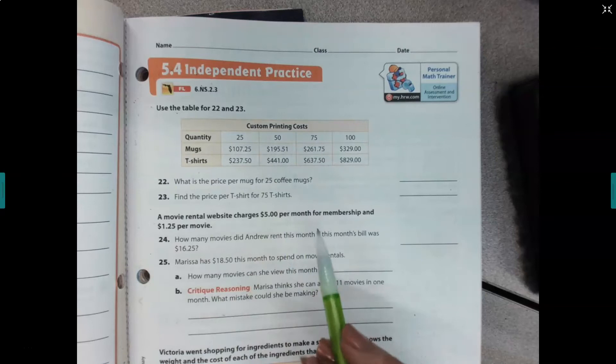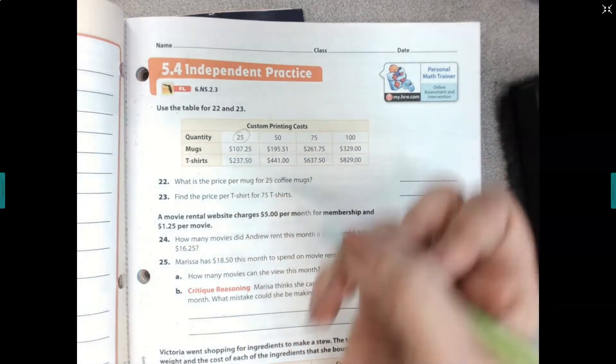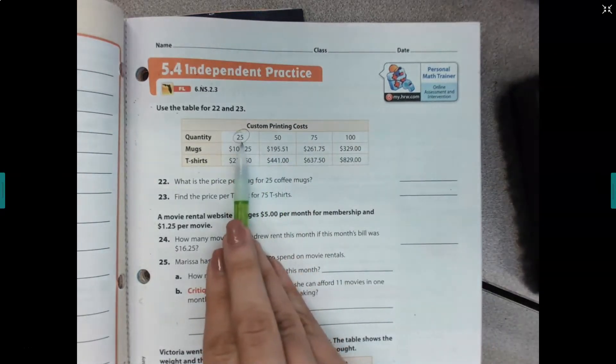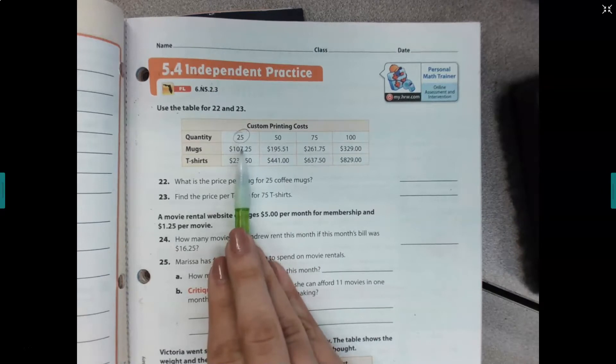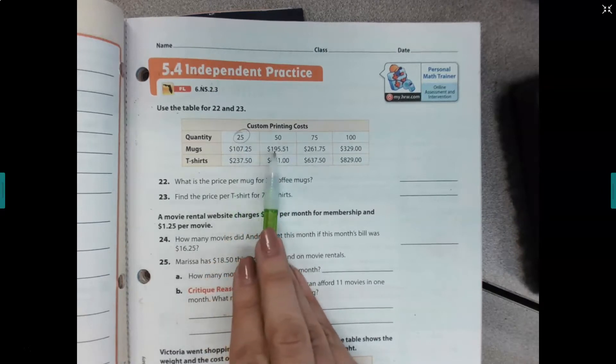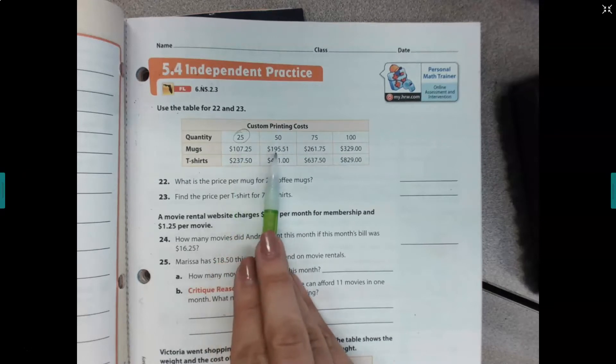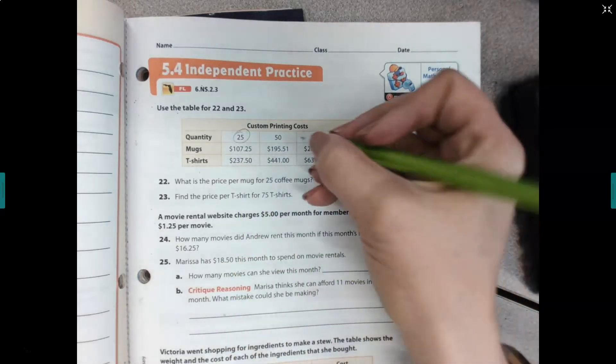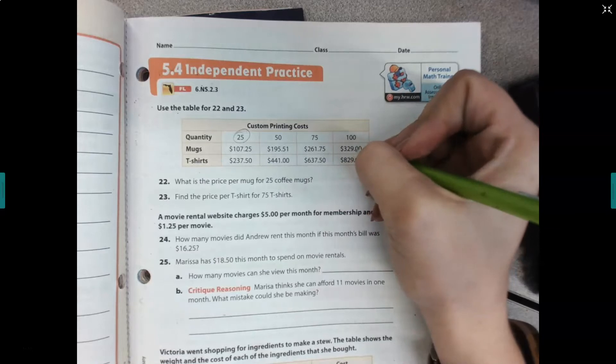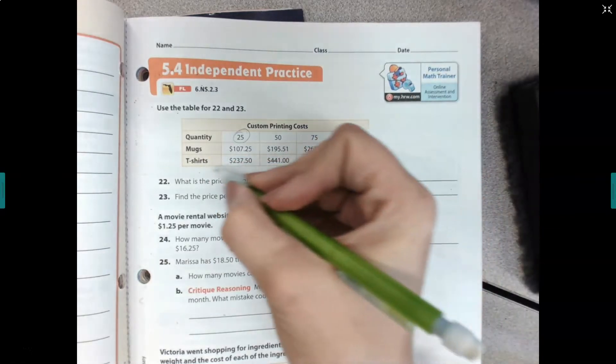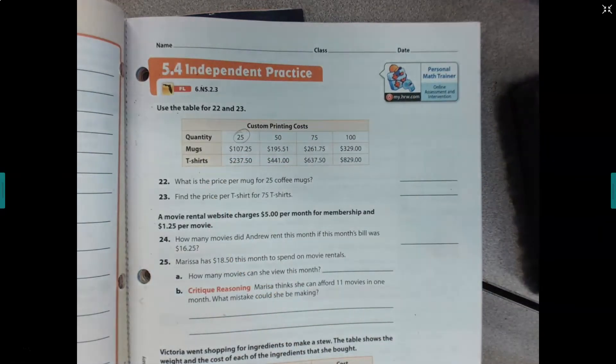So as you go, you might notice that you would expect that if we kept the price per mug the same, this would be exactly double of this. So I should expect this number to be something like $214.50, but it is not. That tells us that as you buy more, the price per mug or price per t-shirt goes down.